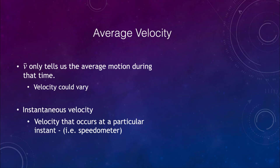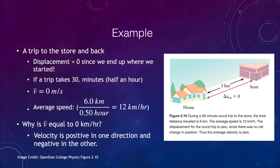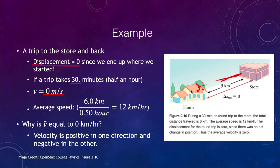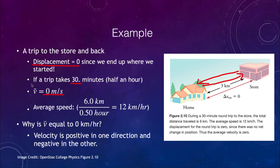Let's look at a trip to the store. Our displacement is going to be zero — because we went to the store and came back, ending up at the same spot, so there is no net change in position. If this trip takes 30 minutes, then our average velocity would be zero, because half of our velocity was going in the positive direction toward the store and the same average velocity coming back, so the two cancel.